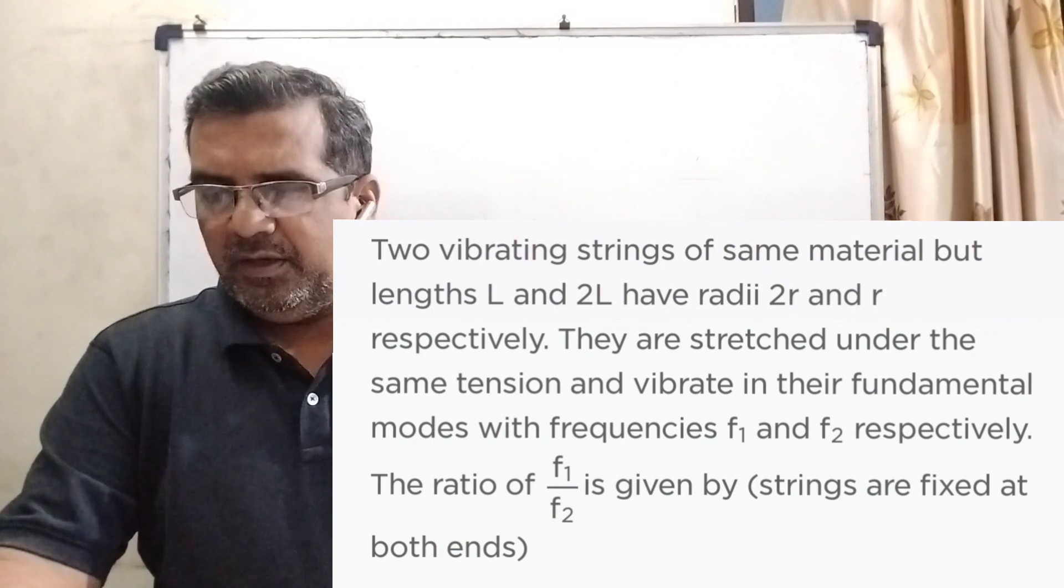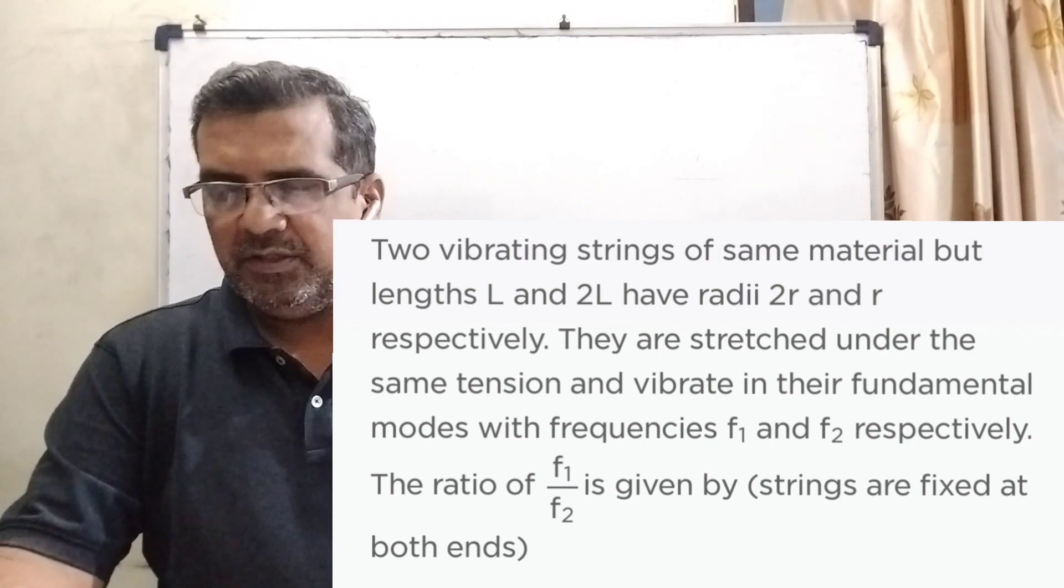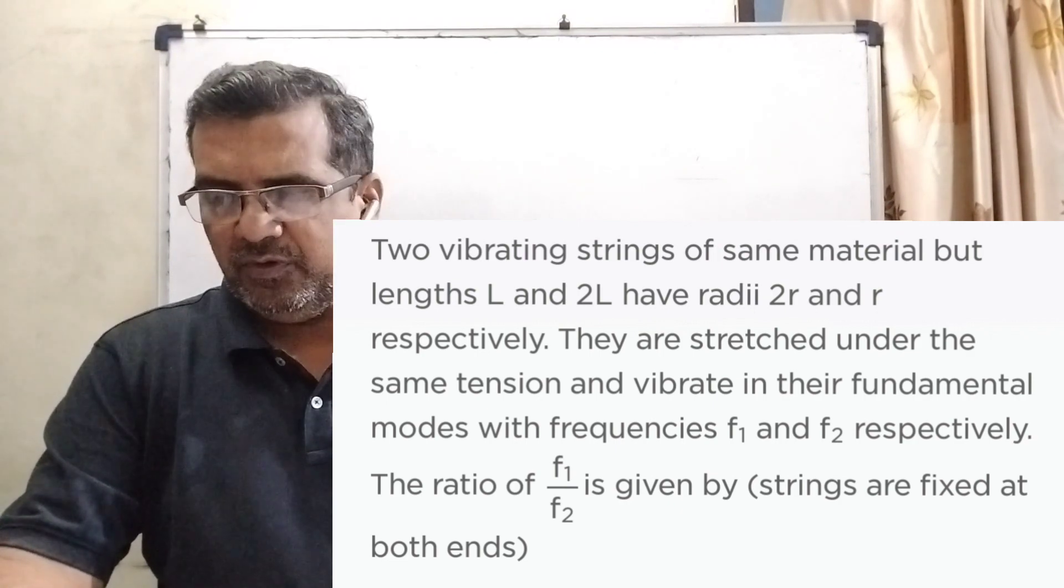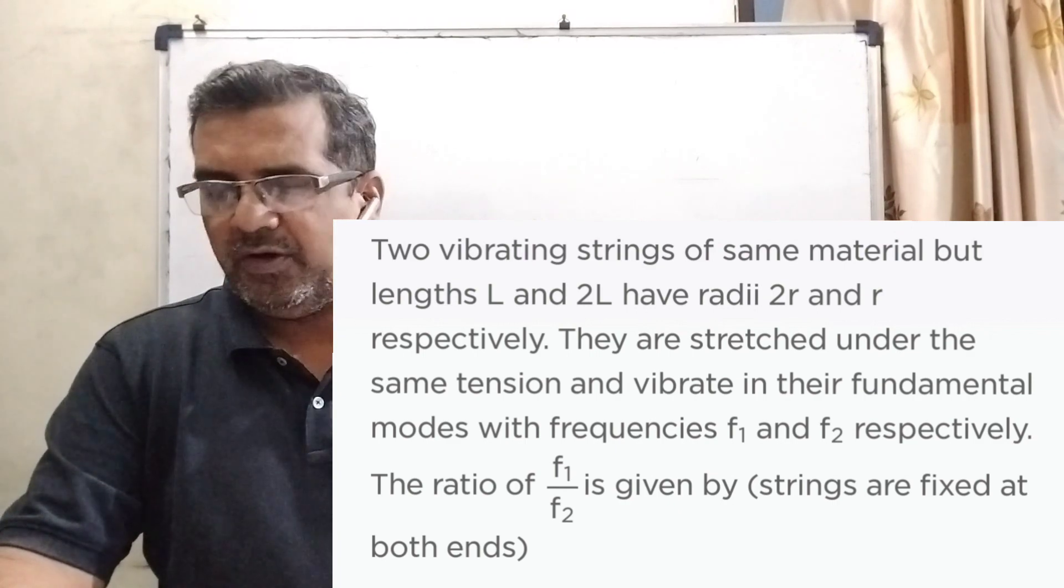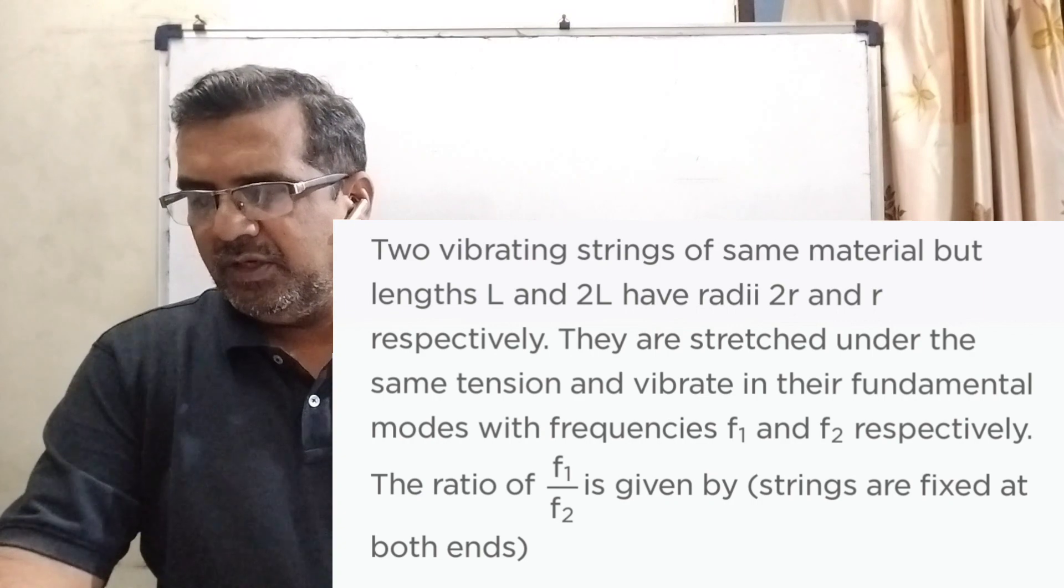The ratio of f1 to f2 is given by, strings are fixed at both ends. Here we have given four options. Option A is 2. Option B is 4. Option C is 8. And option D is 1. And this question is asked IIT 2000.